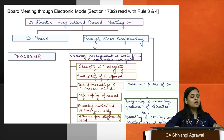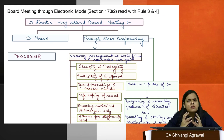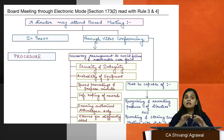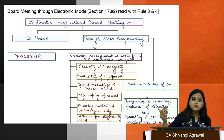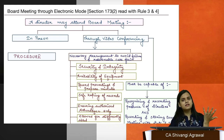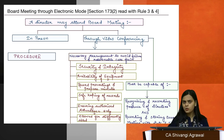Section 173(2) talks about video conferencing. A board meeting may also happen through video conferencing — not a mere telephonic call, but audio-visual both. A director unable to attend physically can attend virtually. Section 173(2) is read with Rules 3 and 4. Rule 4 previously prescribed certain matters that could only be dealt with at a physical board meeting, but those matters have now been omitted, so no matter is specifically reserved for a physical board meeting.